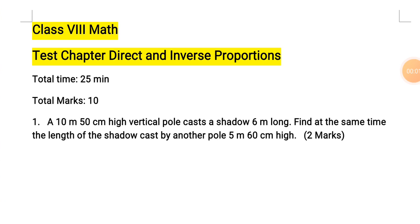Hello my dear all. Today I am here with a chapter test of chapter direct and inverse proportion. My first question is: a 10 meter 50 centimeter high vertical pole casts a shadow 6 meters long. Find, at the same time, the length of the shadow cast by another pole 5 meter 60 centimeter high.